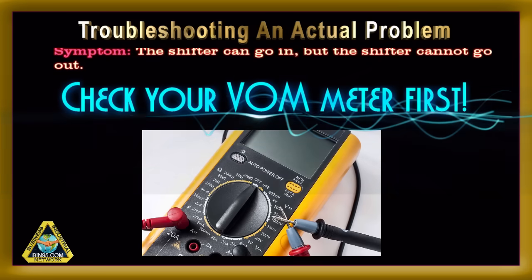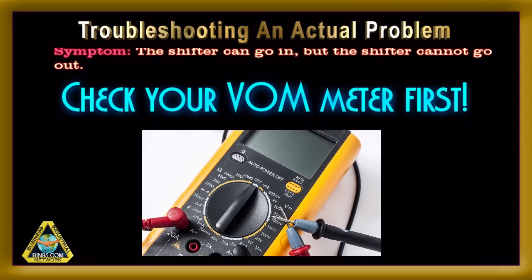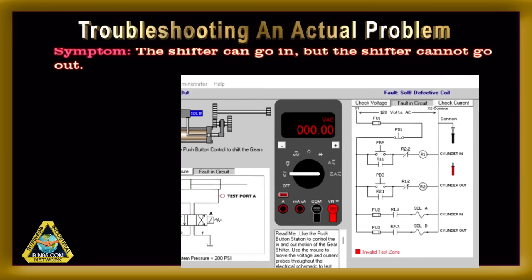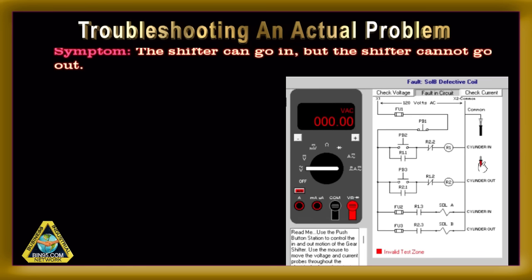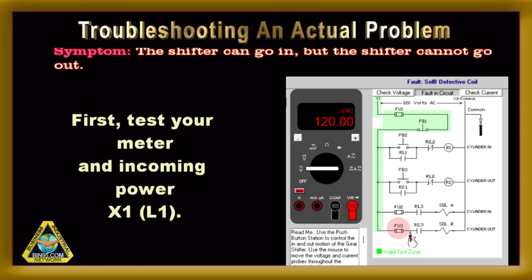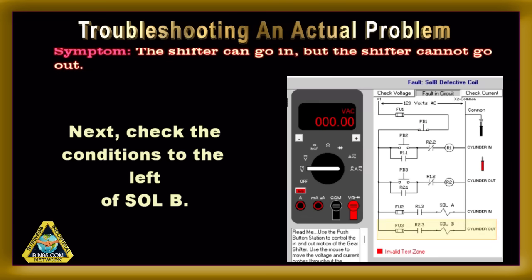We'll choose the output side to start the trace for this exercise. Check the meter out using the first fuse or breaker upstream of the point where we will begin the trace, FU3 — the primary power input to the circuit in question. This process also eliminates one of the possible causes: FU3 is good and the meter works. On this run of the circuit, there is only one condition required to energize the cylinder out coil. So, we check that condition.